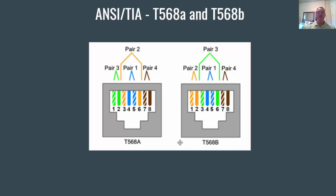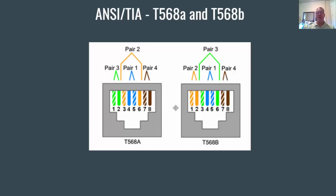A straight-through ethernet cable will typically have white-orange on the left on both ends, or white-green on the left on both ends — that's what we use today. With gigabit ethernet, all four pairs of wires send data. In older fast ethernet at 100 megabit per second half duplex, only pair three did the transmitting and pair two did the receiving, so only two pairs sent and received. With gigabit ethernet, all four pairs of wires send data.